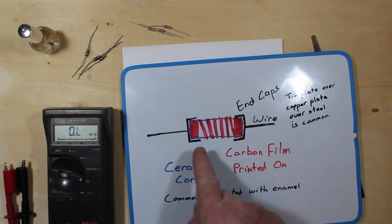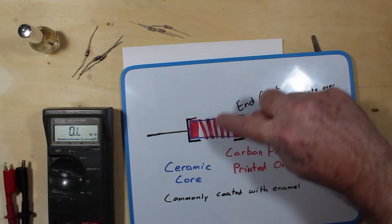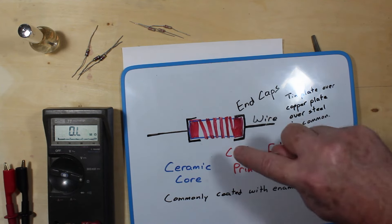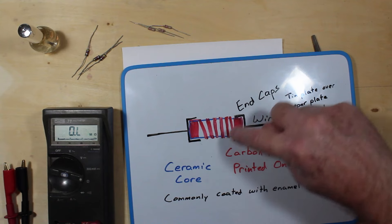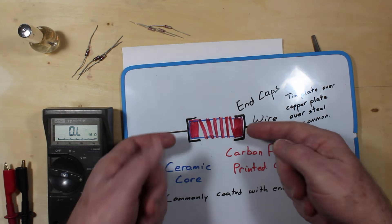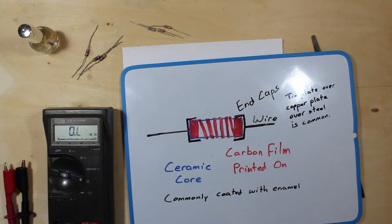They have a carbon film that's printed on a ceramic core and you'll see it goes around the core here and then this adds up all the resistance and that's in this particular case 2700 ohms from end to end here.